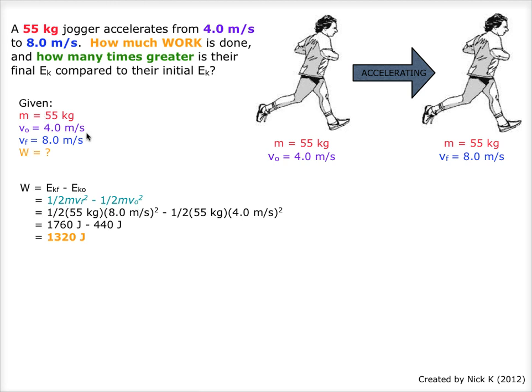Replace these units with their number of quantities in the given box, and we will have 1 half times 55 kilograms times 8.0 meters per second squared minus 1 half times 55 kilograms times 4.0 meters per second squared.